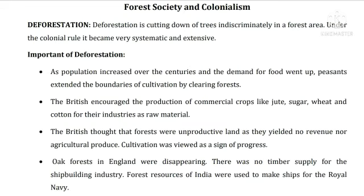As population increased over the centuries and the demand for food went up, peasants extended the boundaries of cultivation by clearing forests. The British encouraged the production of commercial crops like jute, sugar, wheat, and cotton for their industries as raw material. The British thought that forests were unproductive land as they yielded no revenue nor agricultural produce. Cultivation was viewed as a sign of progress.